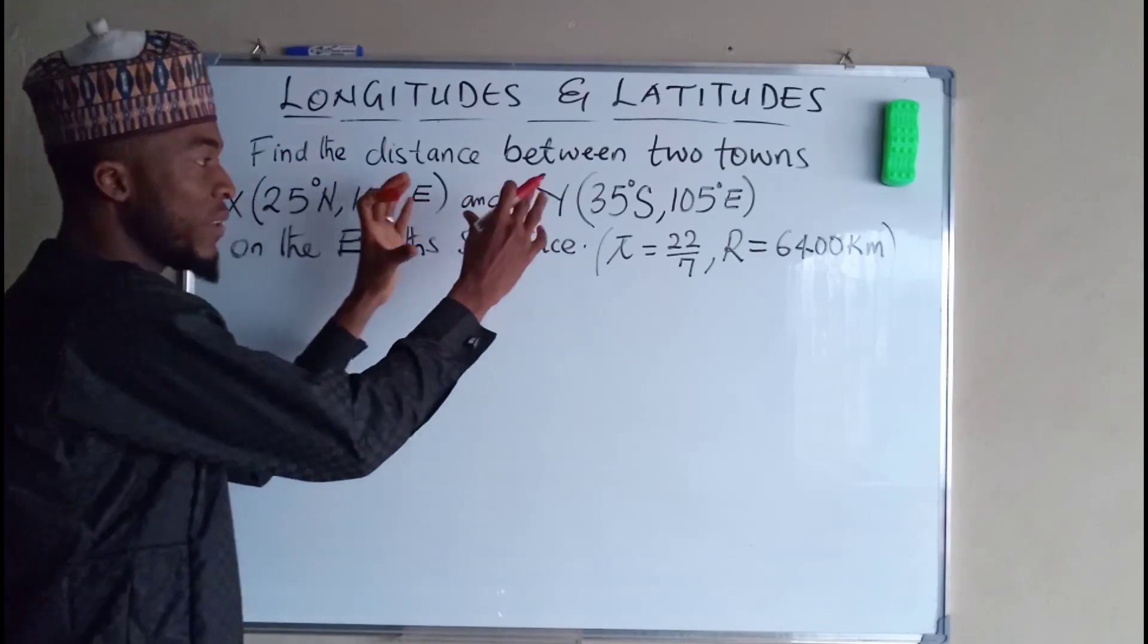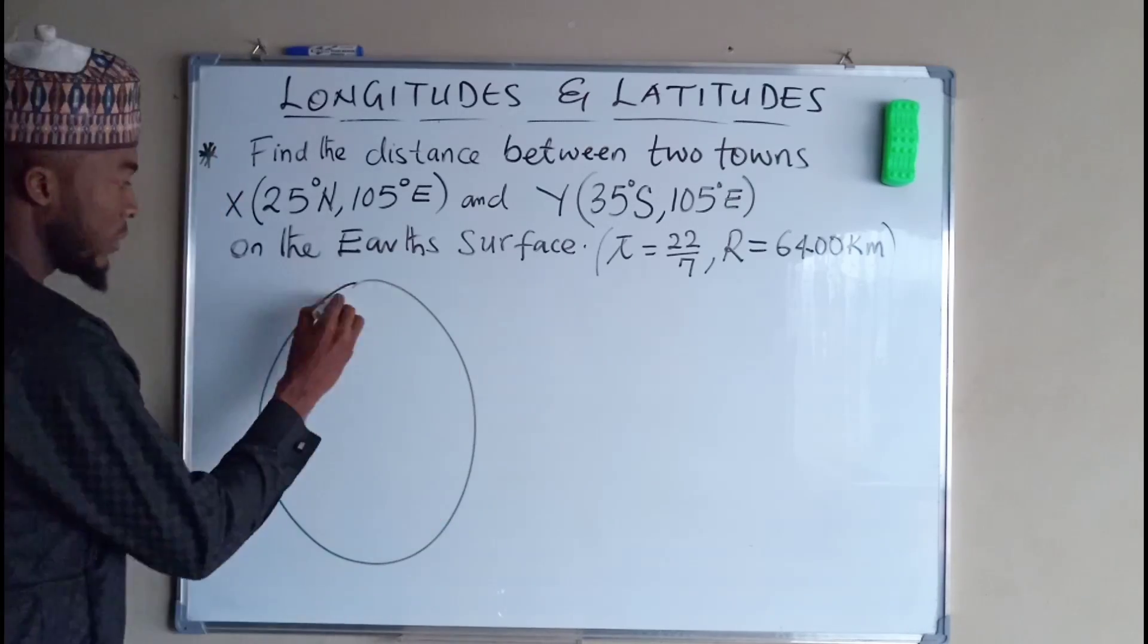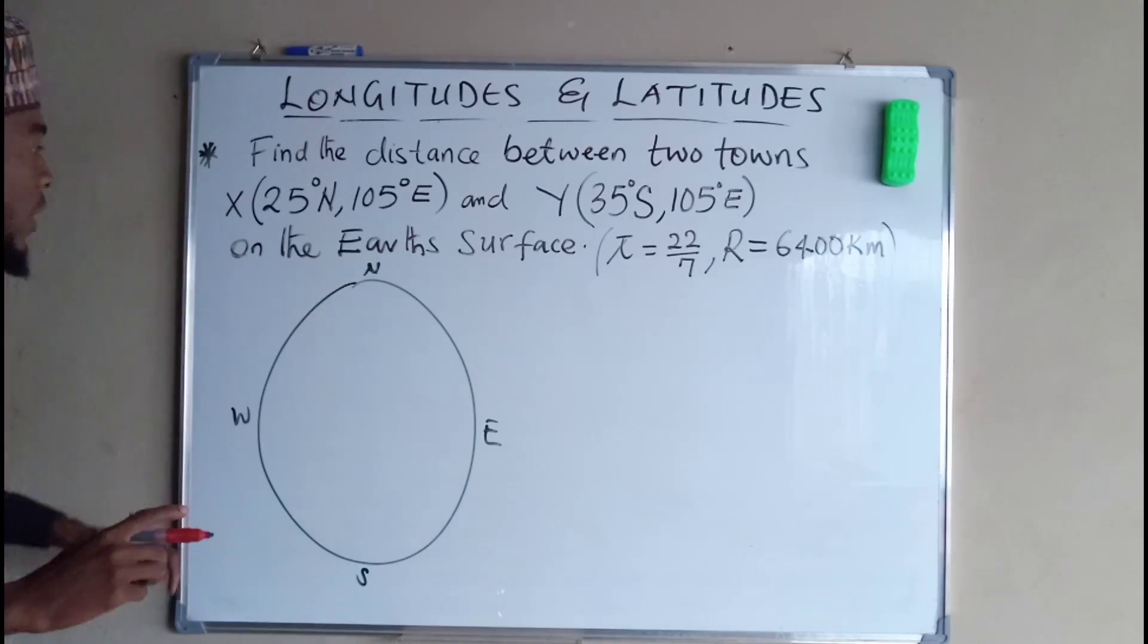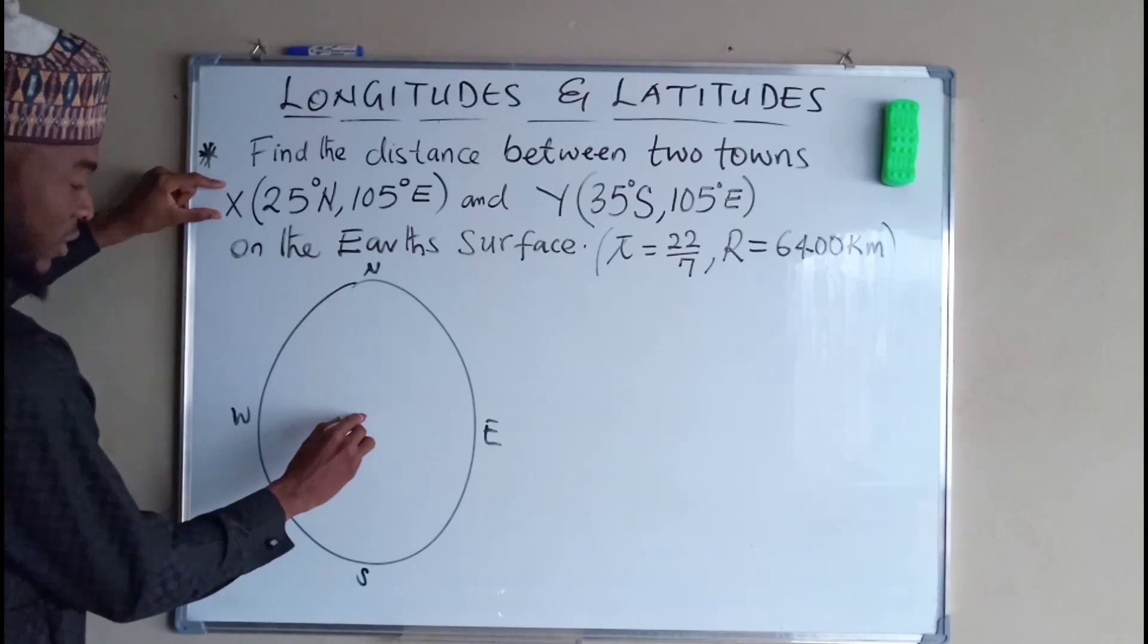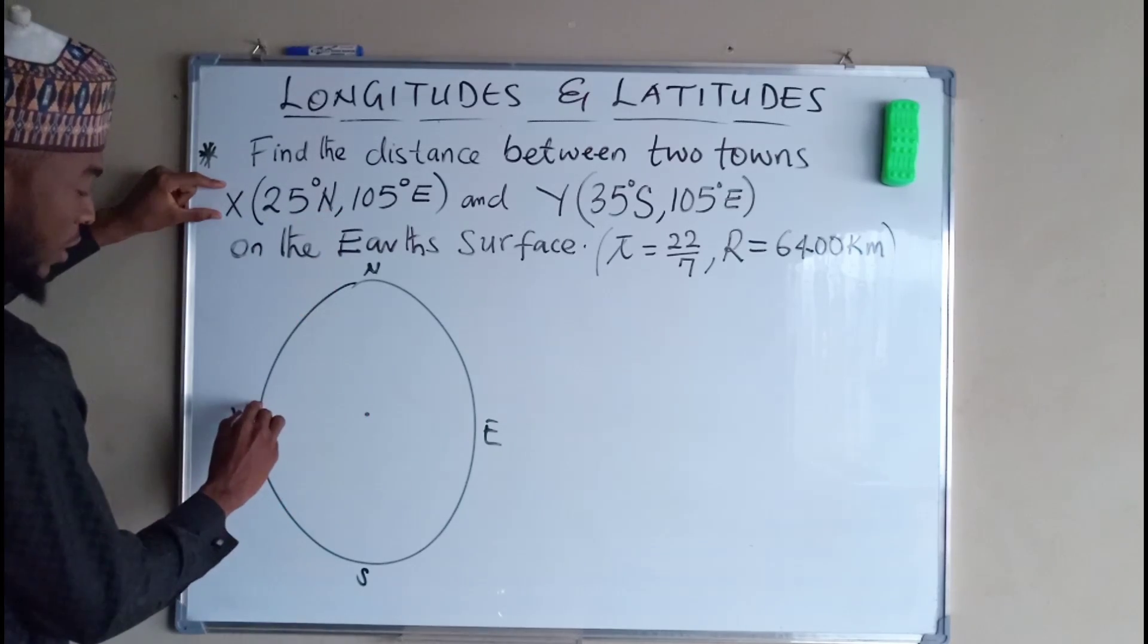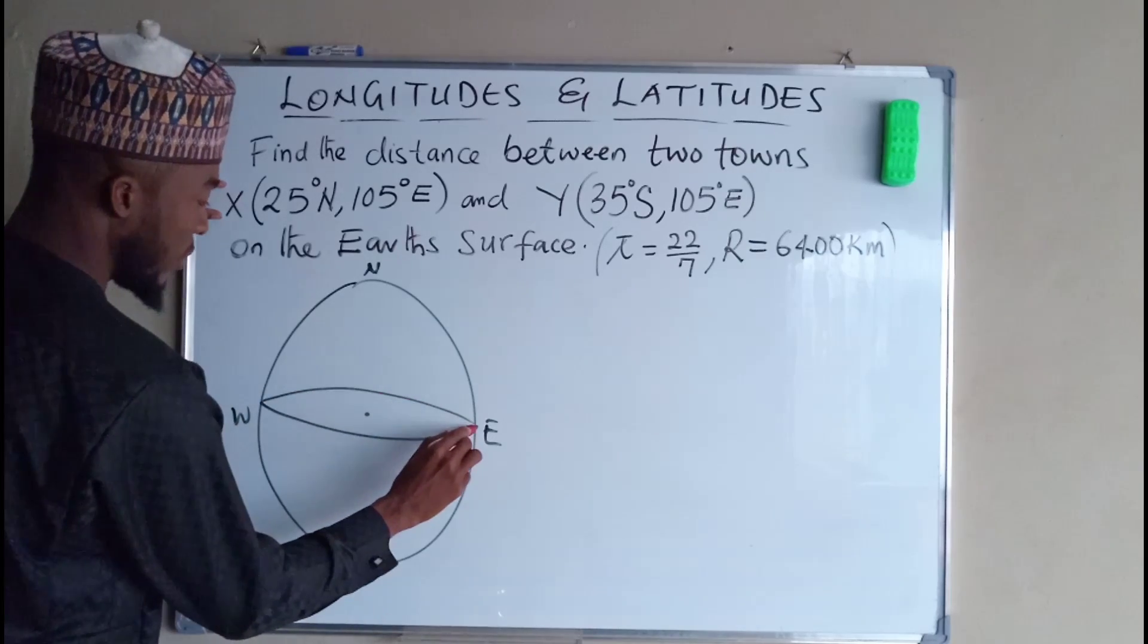So now let's represent each of these towns. Suppose this is the earth. Town X is on the latitude 25 degrees north. This is the center and the equator is the greatest circle on the center.